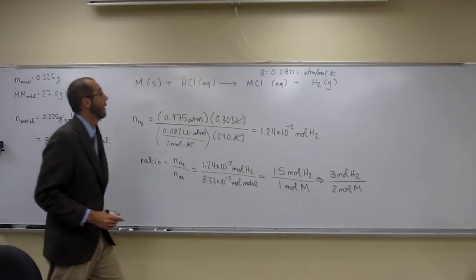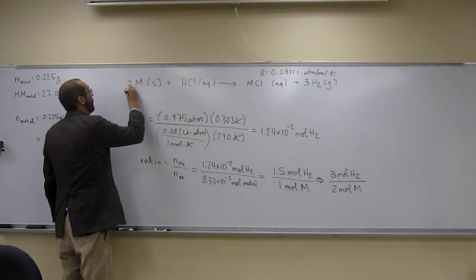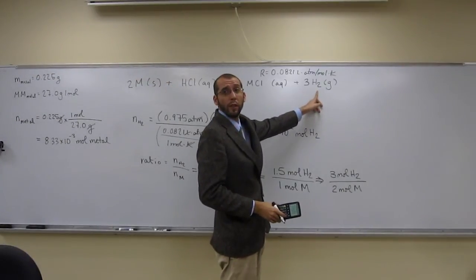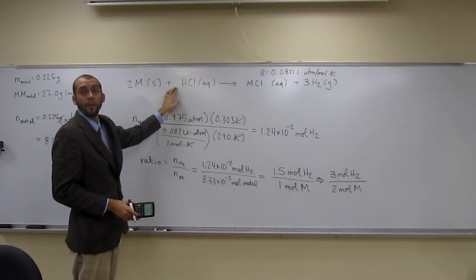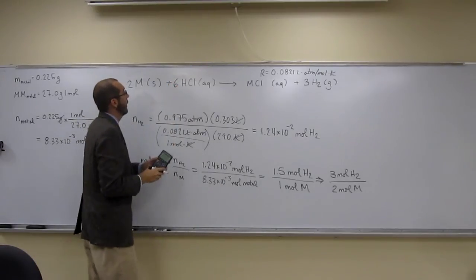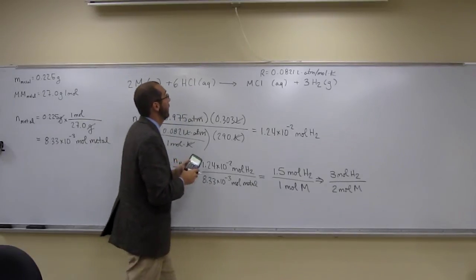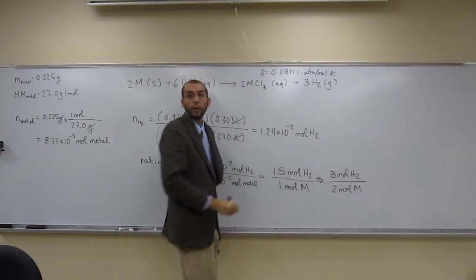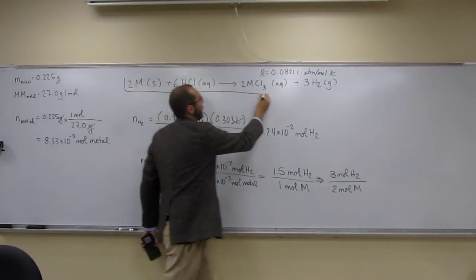So we put coefficient 3 for H₂ and coefficient 2 for the metal. If we have 3 H₂ molecules, that's 6 hydrogens, which means we need a coefficient of 6 for HCl. With 2 M's and 6 Cl's, the chloride is MCl₃, with coefficients 2 and 3 respectively. That gives us our balanced reaction equation: 2M + 6HCl → 2MCl₃ + 3H₂.